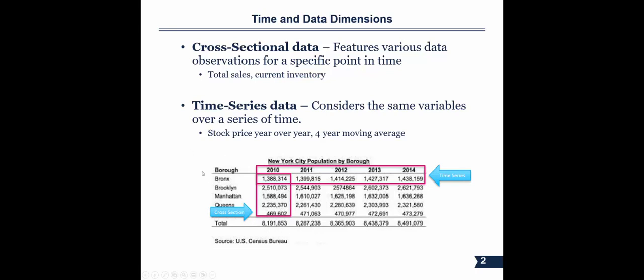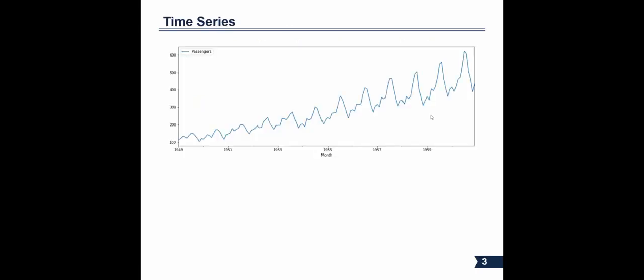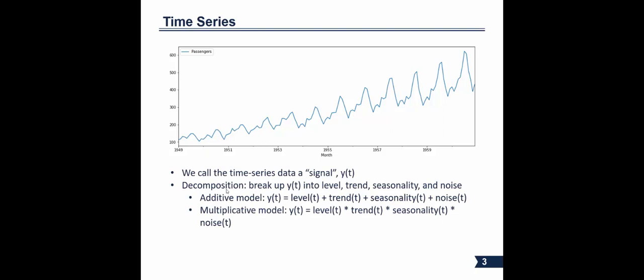When you talk about time series analysis and the change in data over time, if you visualize it, you'll get something we call the signal — just visualizing how that data is changing over time. The signal is actually comprised of four different things: level, trend, seasonality, and noise. All four of these are comprised in the signal, and it can be broken down into those components.